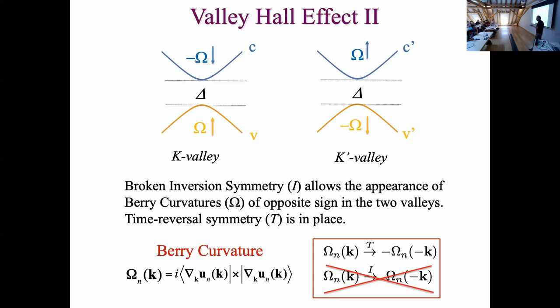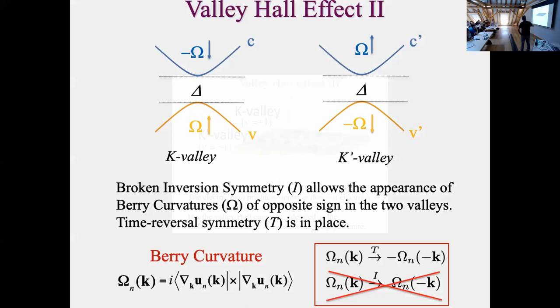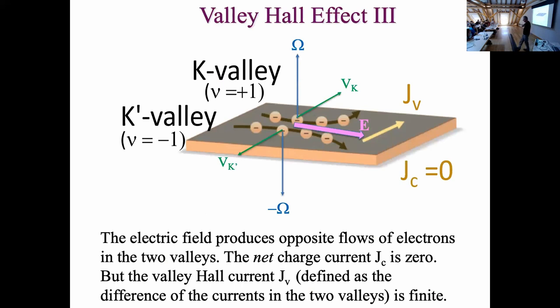However, still we will have effects associated with the anomalous velocity. And here we have the Valley Hall Effect. So we have, we apply the electric field in this direction, and it generates anomalous velocity in the two bands, because the two bands have opposite Berry curvature. And so you see that the electrons in one valley, having one sign, move in one direction, and the electrons in the other valley move in the opposite direction, and this leads to separation, and possibly the accumulation of valley density at the edges of the system.